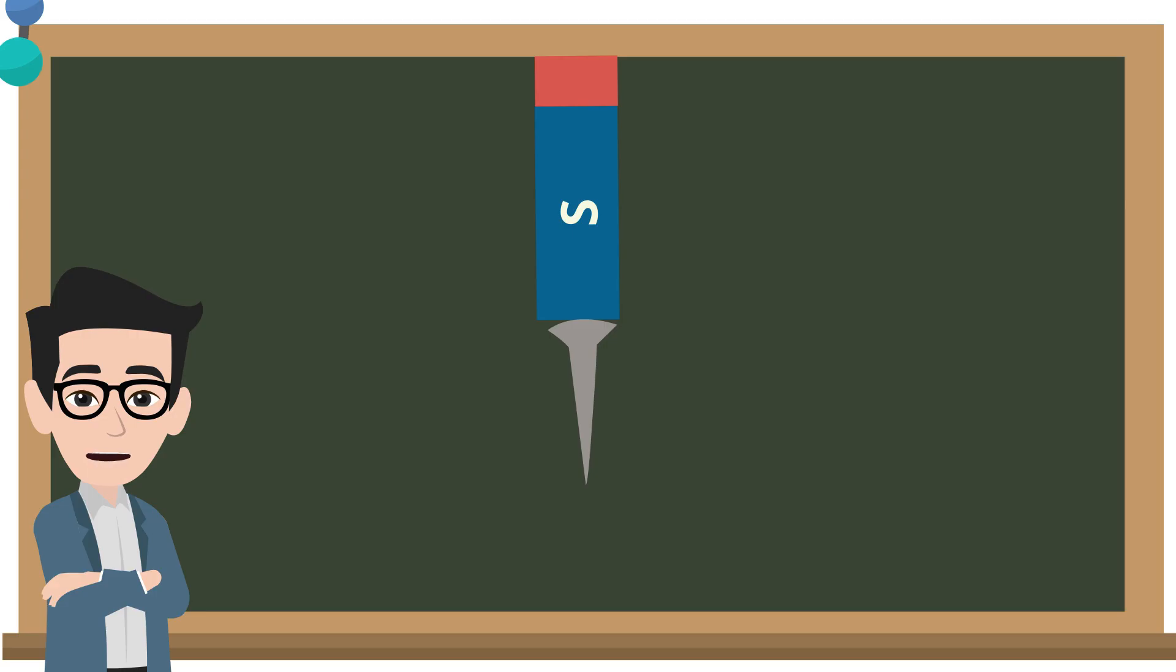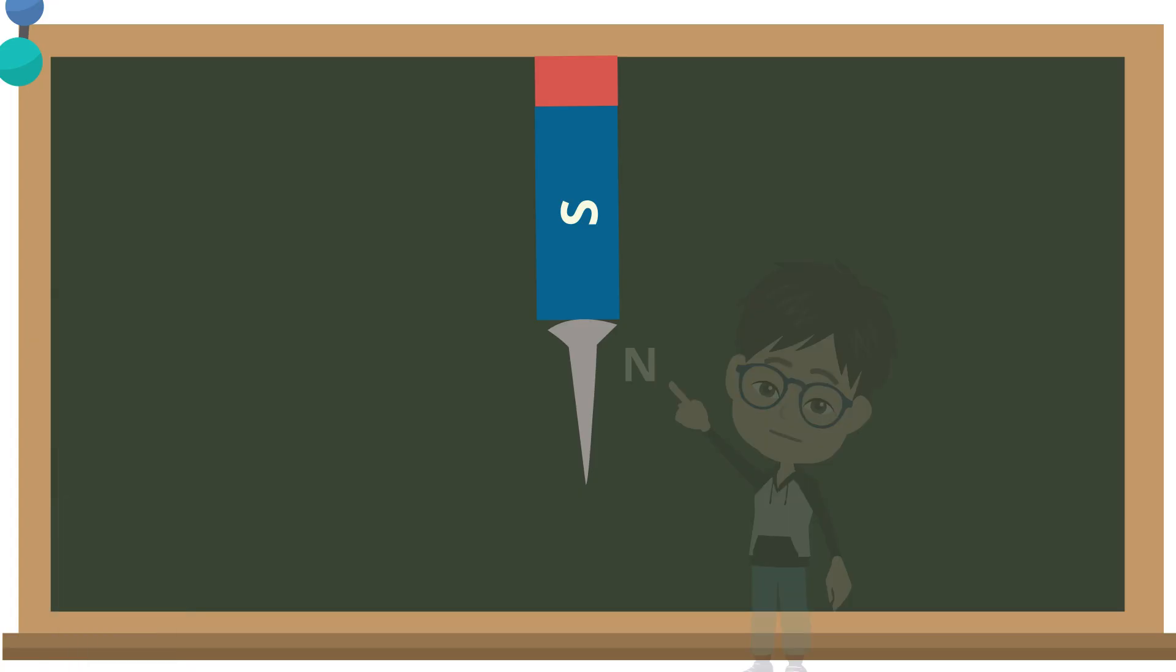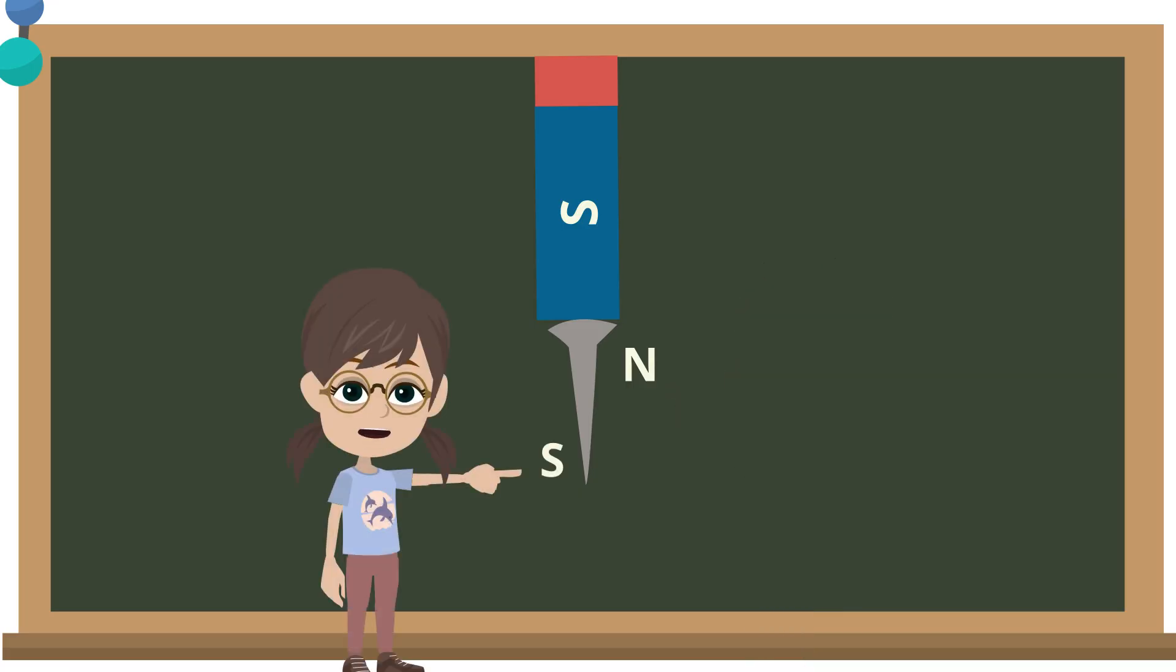Based on your observations earlier, can you identify the magnetic poles of the temporary iron nail magnet? This side of the temporary iron nail magnet is the north pole. Meanwhile, the south pole of the temporary iron nail magnet is at the other end.